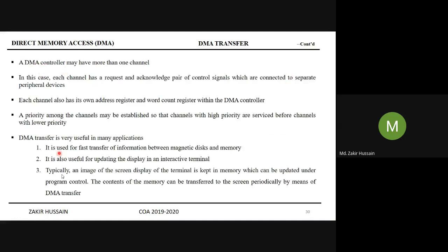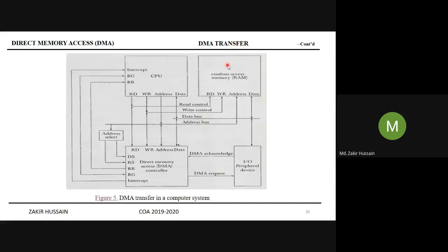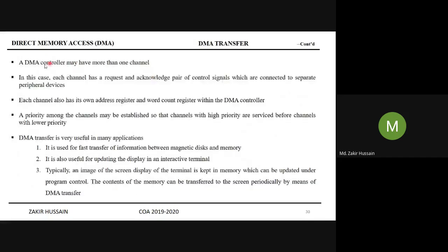A DMA controller may have more than one channel. In this case, each channel has a request and acknowledge pair of control signals connected to separate peripheral devices. Each channel also has its own address register and word count register within the DMA controller.